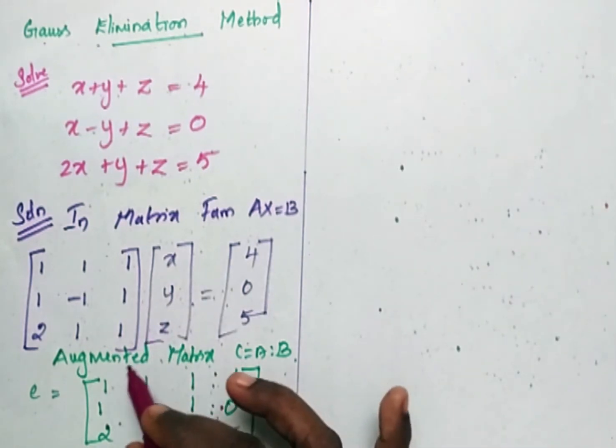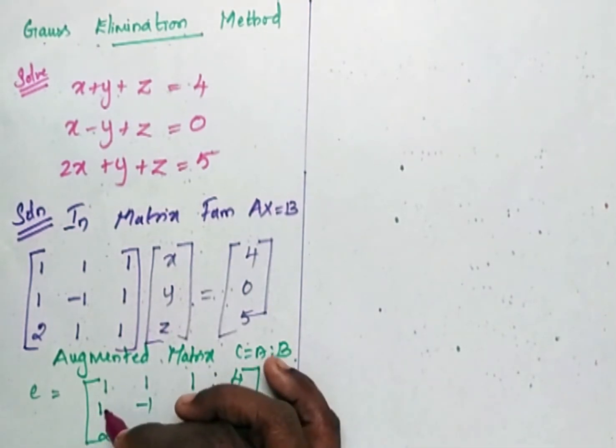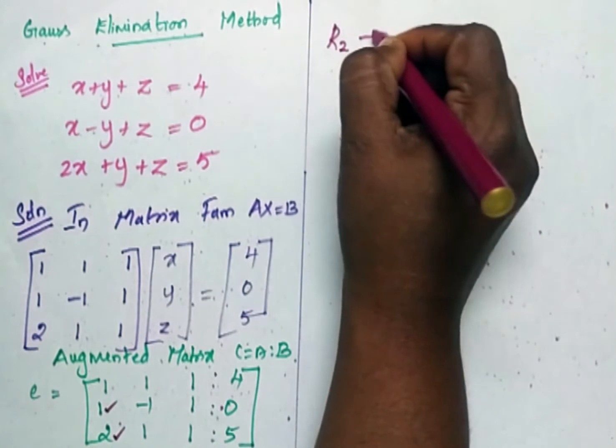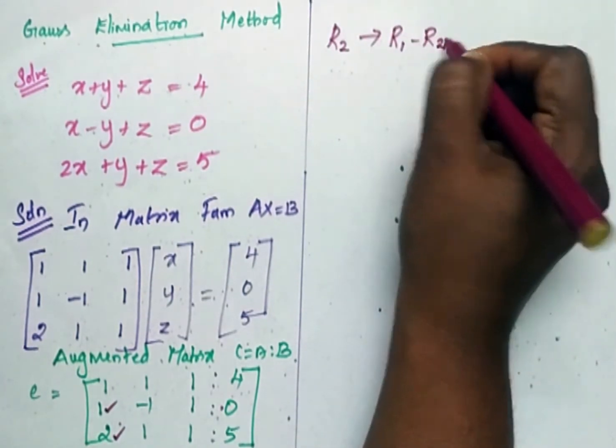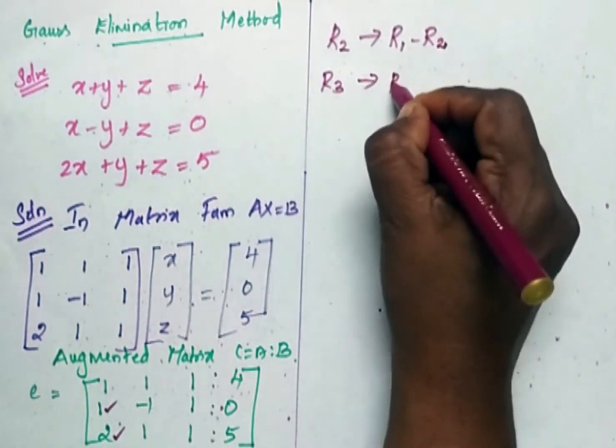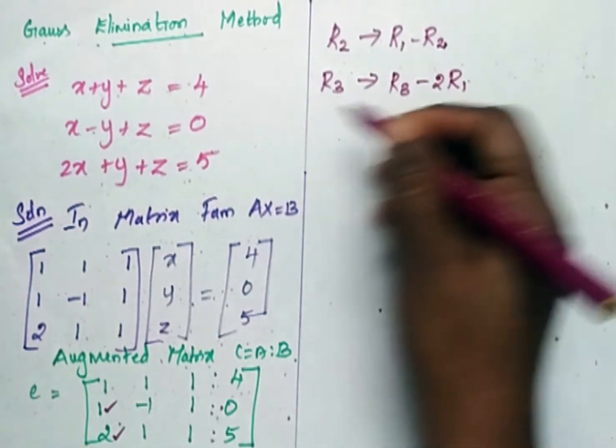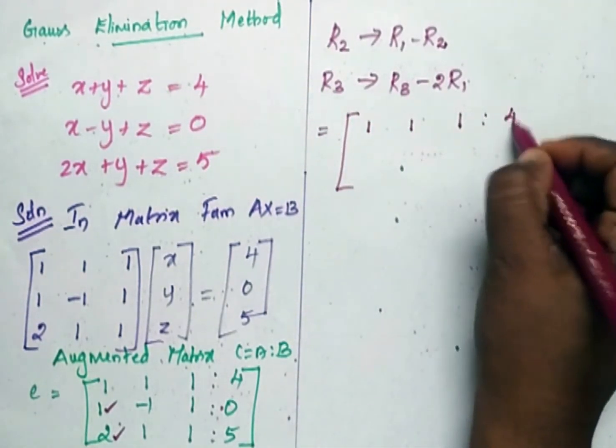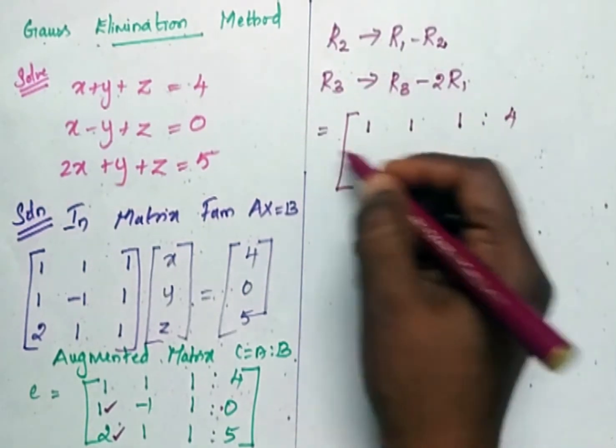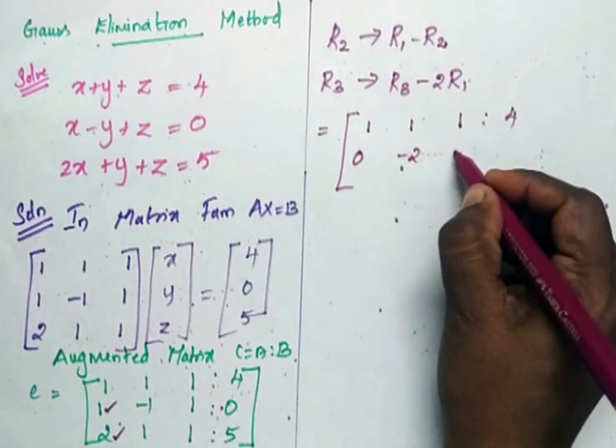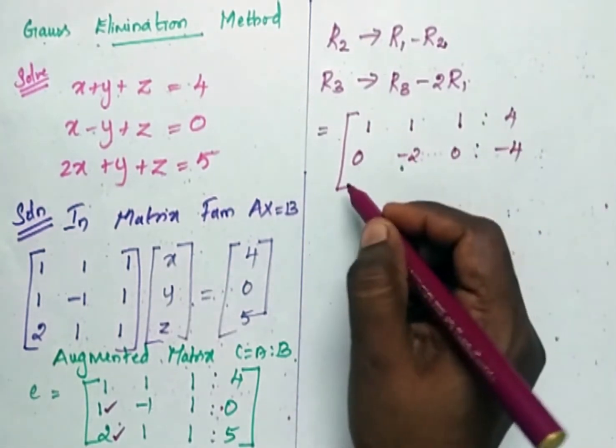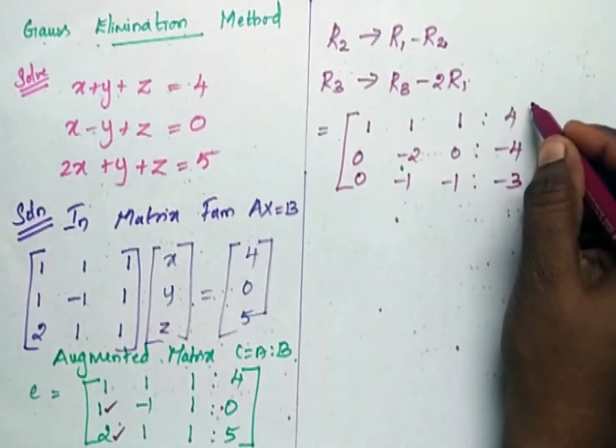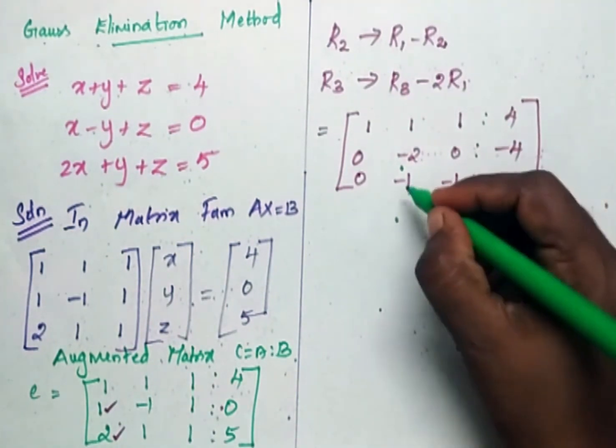Now this augmented matrix has to be reduced in a form that we obtain zeros in these two places. Now I replace my R2 as R2 is R1 minus R2. So the matrix which I obtain is 1, 1, 1, 1, no change in R1. In R2 it is 0, minus 2, 0, minus 4. Then in the third row it is 0, minus 1, minus 1, and here it is minus 3. Now we have to obtain 0 in this place.